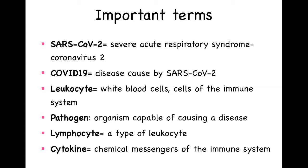COVID-19 stands for coronavirus disease 2019. It is the name of the disease caused by SARS-CoV-2. Leukocytes are also called white blood cells and are the cells of the immune system. A pathogen is any organism capable of causing a disease — it can be a virus, a bacterium, or any other organism. A lymphocyte is a type of leukocyte involved in the adaptive immune response, which we will talk about later in the video. And finally, a cytokine is a chemical messenger used by immune cells to communicate with one another.